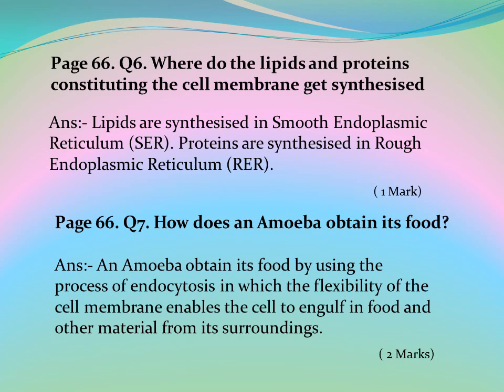Page 66, Question 7: How does an amoeba obtain its food? An amoeba obtains its food by using the process of endocytosis, in which the flexibility of the cell membrane enables the cell to engulf food and other materials from its surroundings.